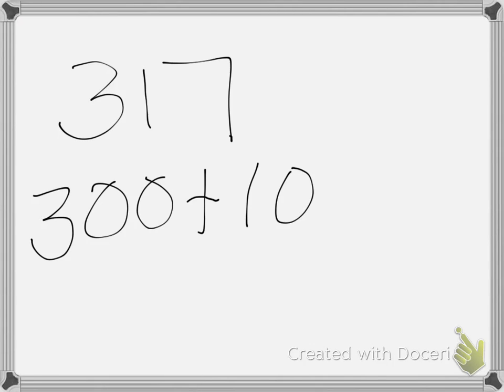When we look at expanded form for a number such as 317, that's 300 plus 10 plus 7. Because I have 300's, 1 ten, and 7 ones. 300 plus 10 plus 7 equals 317.